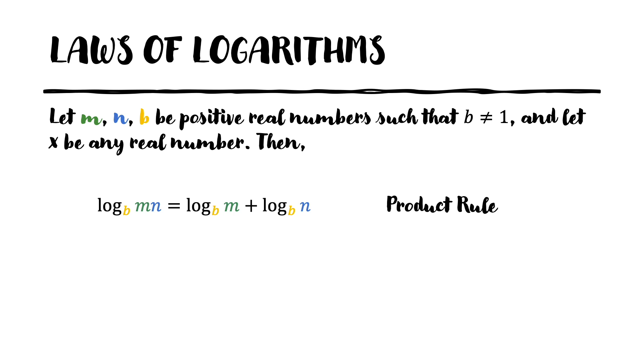Then the next rule is the quotient rule. It says that the log of m divided by n base b is equal to the log of m base b minus log of n base b.